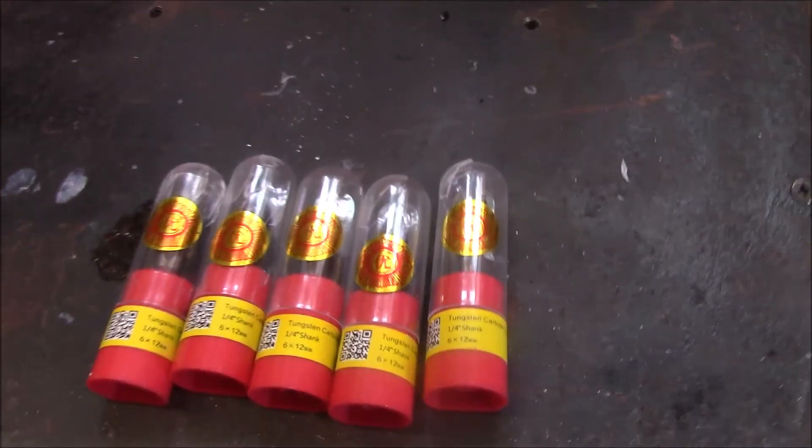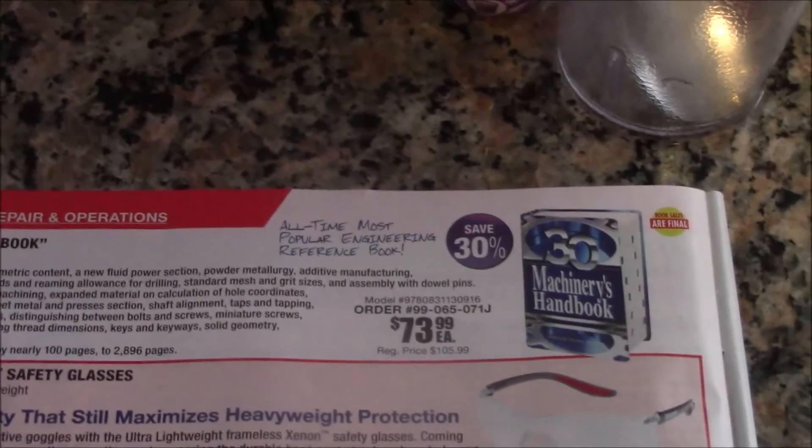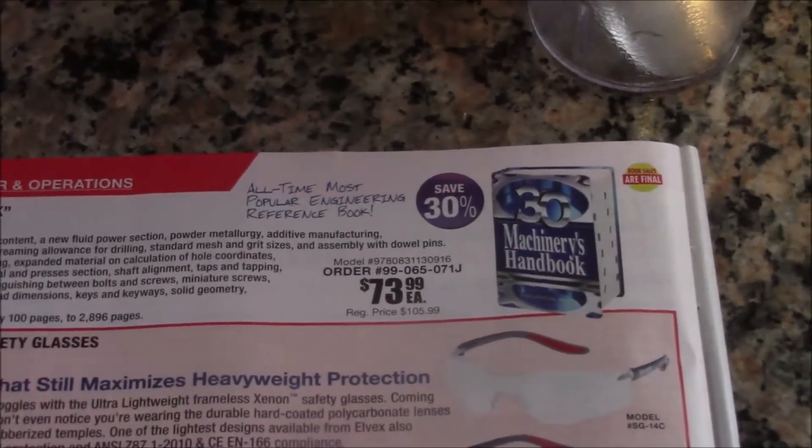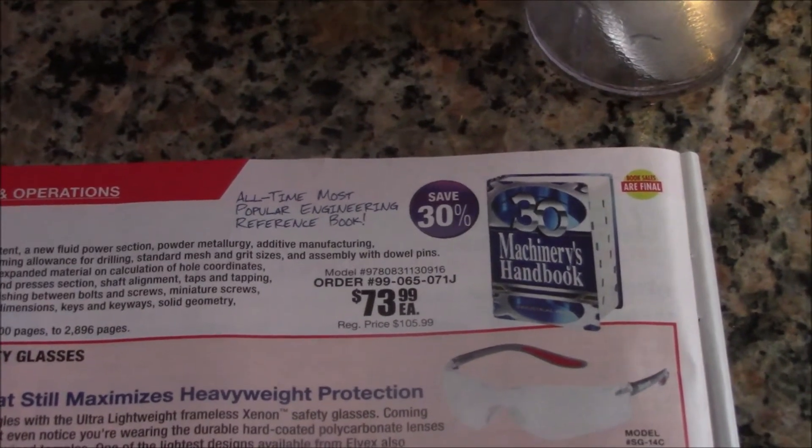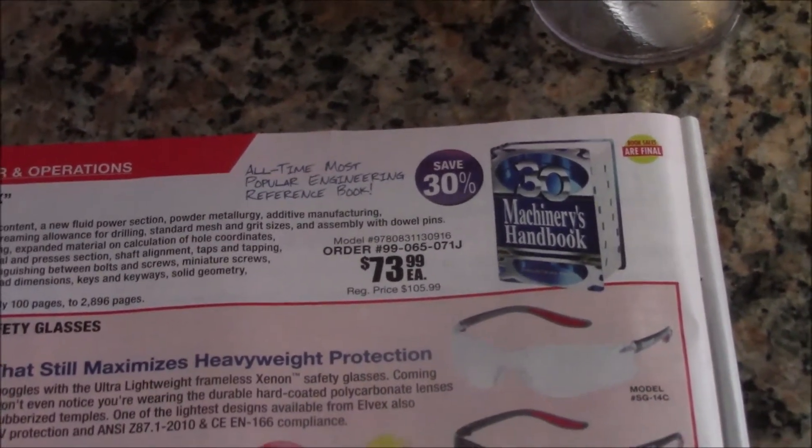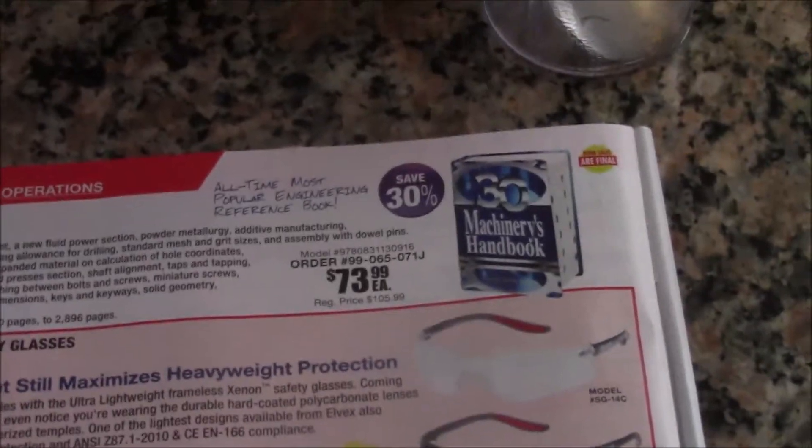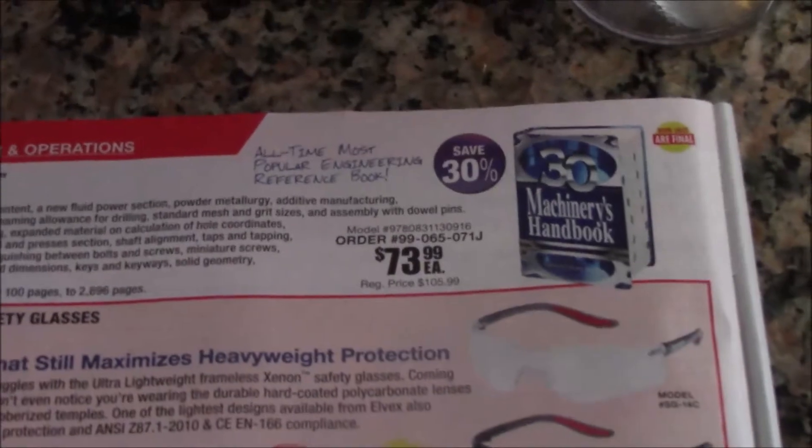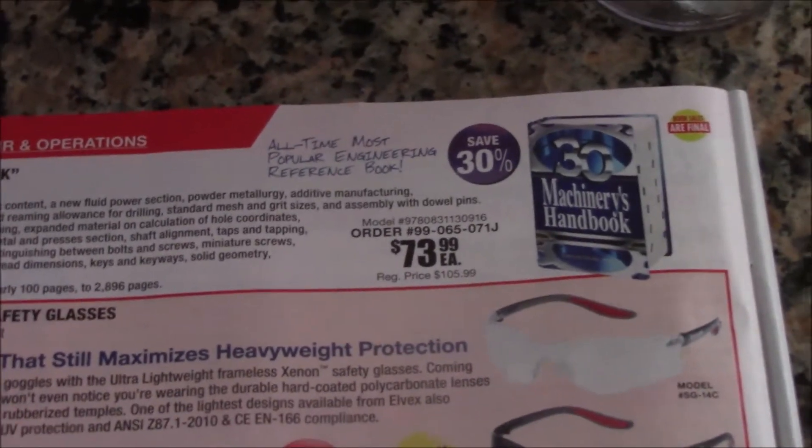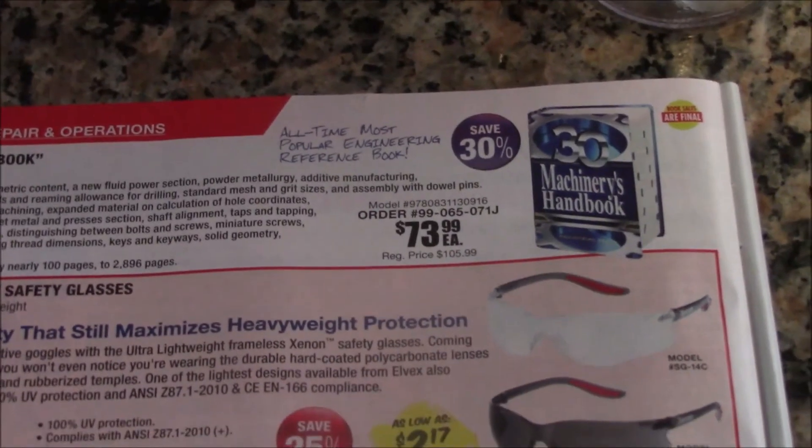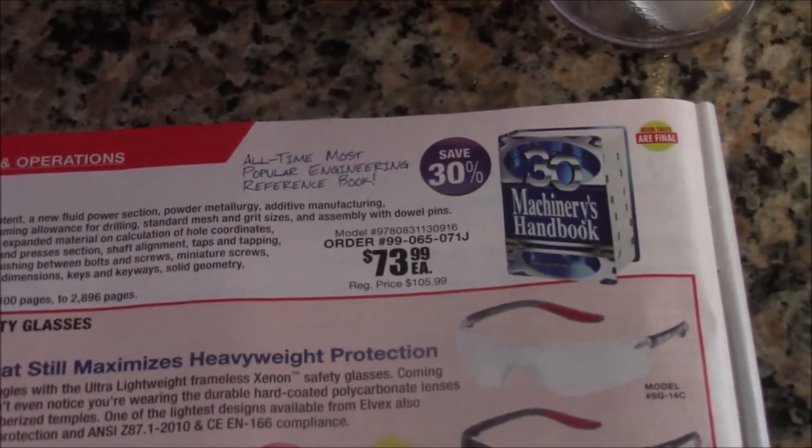Okay, try this again - I forgot to turn the mic on. If any of my viewers are interested, I'm just showing this ad. Travers Tool has a sale running right now on the latest Machinery Handbook at $73.99, or basically $74. These books are usually over $100. I think the list says $105 here for the newest version. So I thought I'd throw that in.